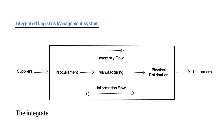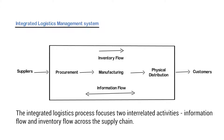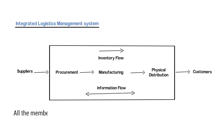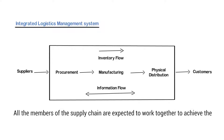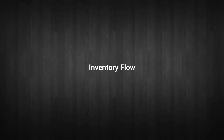Hence, the integrated logistics process focuses on two interrelated activities — information flow and inventory flow across the supply chain. All the members of the supply chain are expected to work together to achieve the objective of meeting the expectation of the customer at the required time at the lowest cost. Let us now discuss the impact of inventory flow in integrated logistics system.